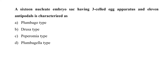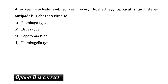The next question is: a 16-nucleate embryo sac having 3-cell egg apparatus and 11 antipodals is characterized as? The correct option is B, that is Drusa type. In this type, the organization of nuclei may vary due to irregularity in the divisions. One example of this type is Rubia.